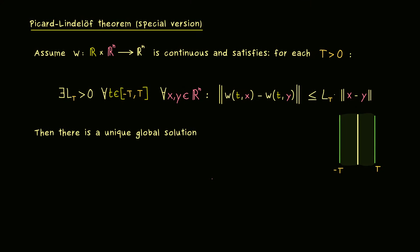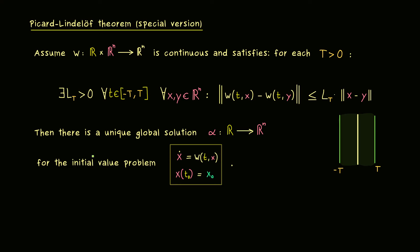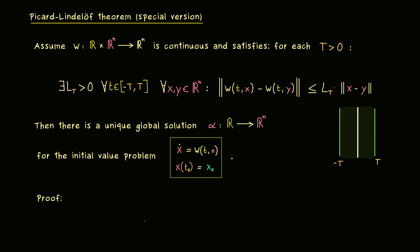The result is really nice: we get a unique global solution for the initial value problem, with the solution defined on the whole real line. This holds for our initial value problem with a fixed x0. You should remember this result because it guarantees the existence of the solution for all points in time — something the original Picard-Lindelöf theorem cannot tell us. For the sake of completeness, let's discuss the proof of this special version. To make our life a little easier, we set t0 = 0, which is not really a restriction since we can always shift the problem to the origin in time.